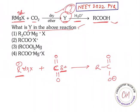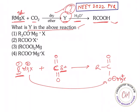So this is the resultant. There is a negative charge here, and MgX will be positively charged. This positively charged MgX will attack on the oxygen, giving the intermediate R-C(=O)-O⁻ MgX⁺.